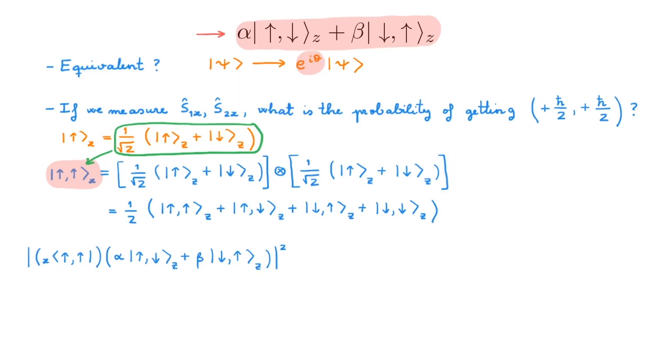This probability is given by the overlap between the up up Sx state and the starting state like this. We can then replace the expression for the up up Sx state in terms of the Sz basis we obtain here, and we get this long expression.